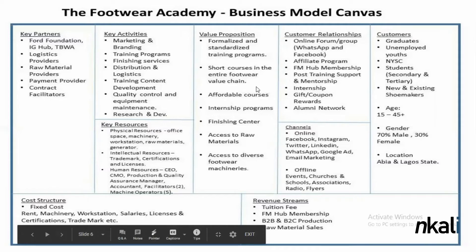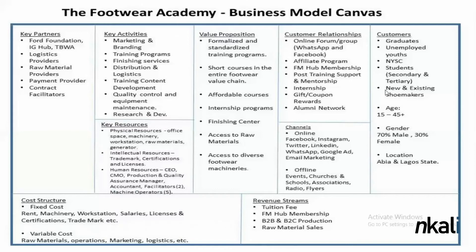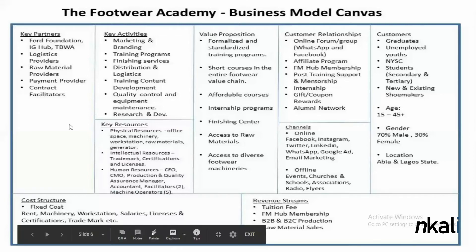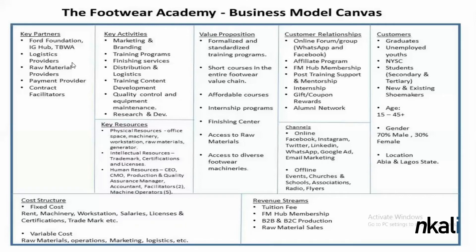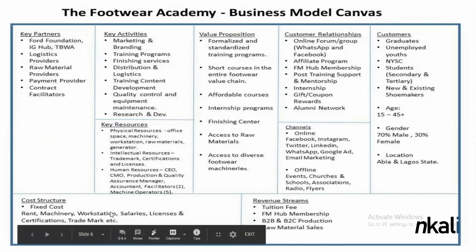At a glance, you could see we had a lot of value propositions, our customers figured out, we knew where to find them, how to keep them, and how to make money. Our key partners as of 2018 were Ford Foundation, IG Hub, CBWA, logistics providers, raw material providers, payment providers, and contract facilitators. Key activities included marketing and branding, and our key resources and cost structure were also documented. This list can be updated as much as possible.